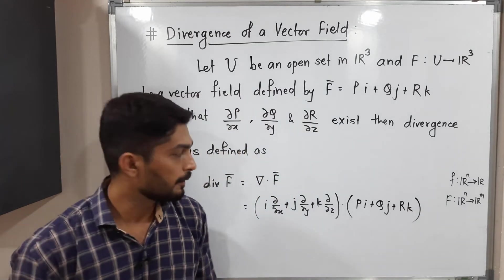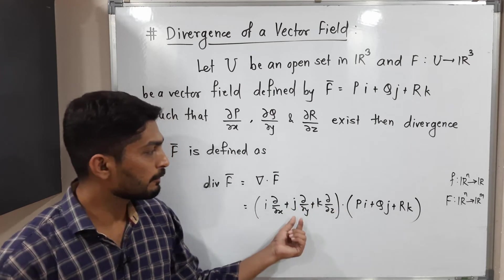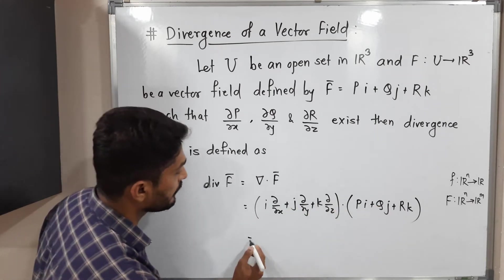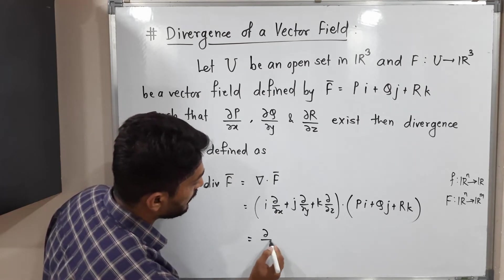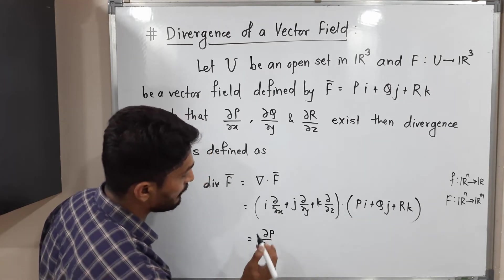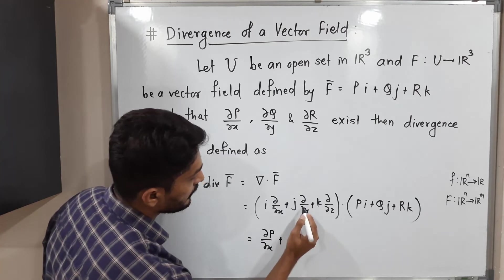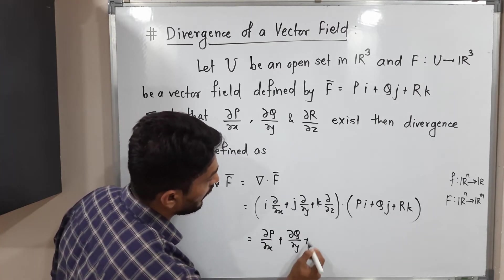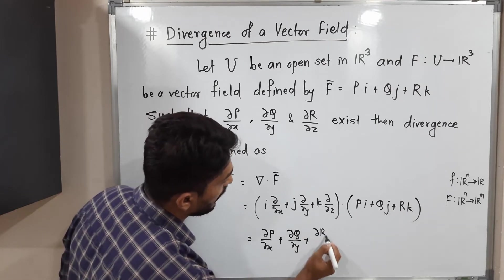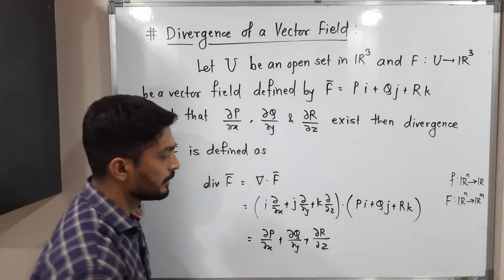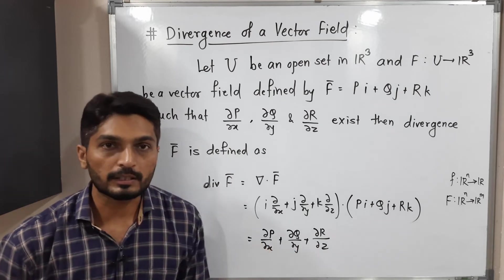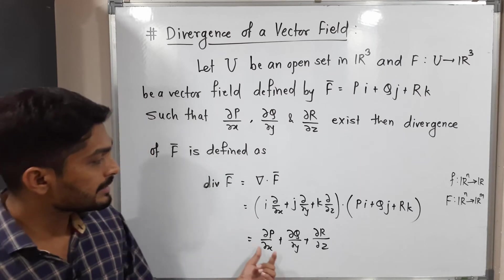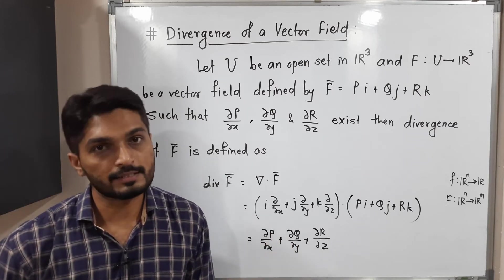Our F̄ = Pi + Qj + Rk. Taking the dot product — the i component with i, j with j, k with k — we get: ∂P/∂x + ∂Q/∂y + ∂R/∂z. The addition of these three terms is the divergence of F̄. These three partial derivatives must exist, which is why we stated that as a basic condition.